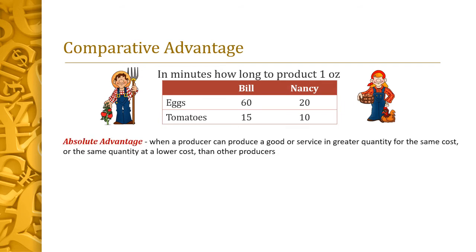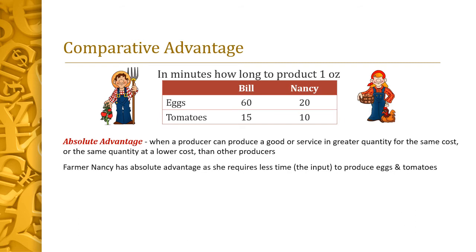Absolute advantage is the ability to produce a good using fewer inputs than another person — whether that's an individual like LeBron James in basketball, a company like Amazon for home delivery, a region like the southern U.S. for fried chicken, or a country like Guatemala growing bananas due to its climate. The farmer who needs a smaller quantity of input always has the absolute advantage. In our example, the only input is time, though in the real world we'd also look at costs like seed or feed. Farmer Nancy has the absolute advantage — she requires less time to produce both eggs and tomatoes.